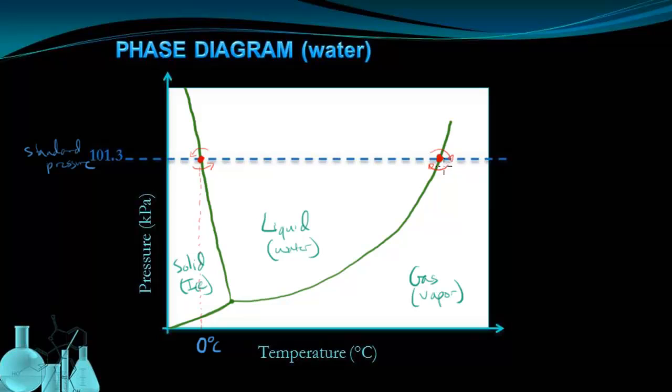So those two phase changes also occur at a particular temperature at standard pressure. And that particular temperature, for boiling or for condensation, we know is 100 degrees Celsius.